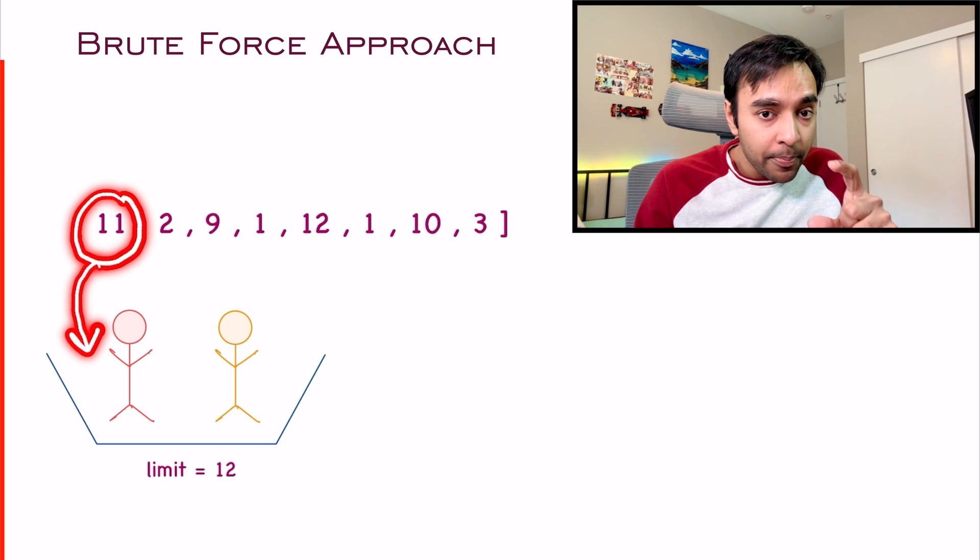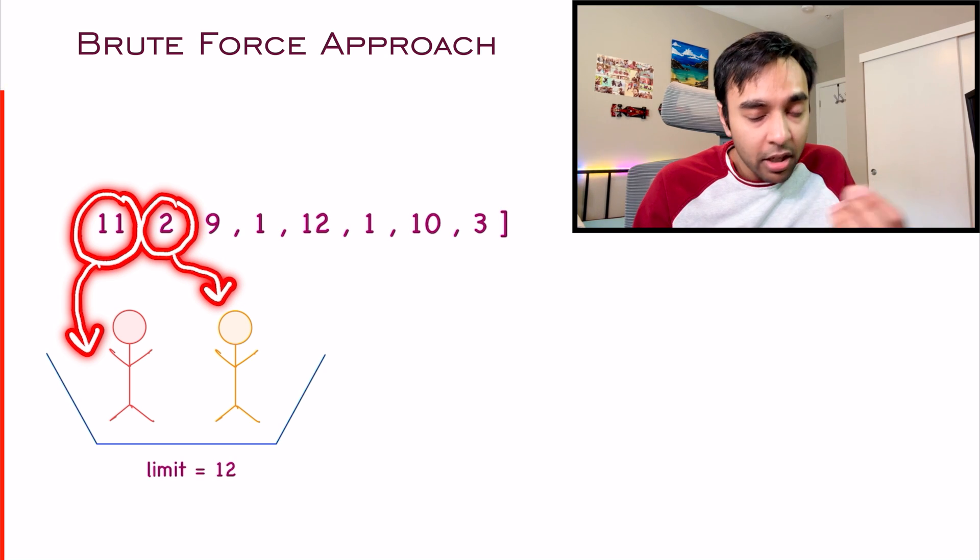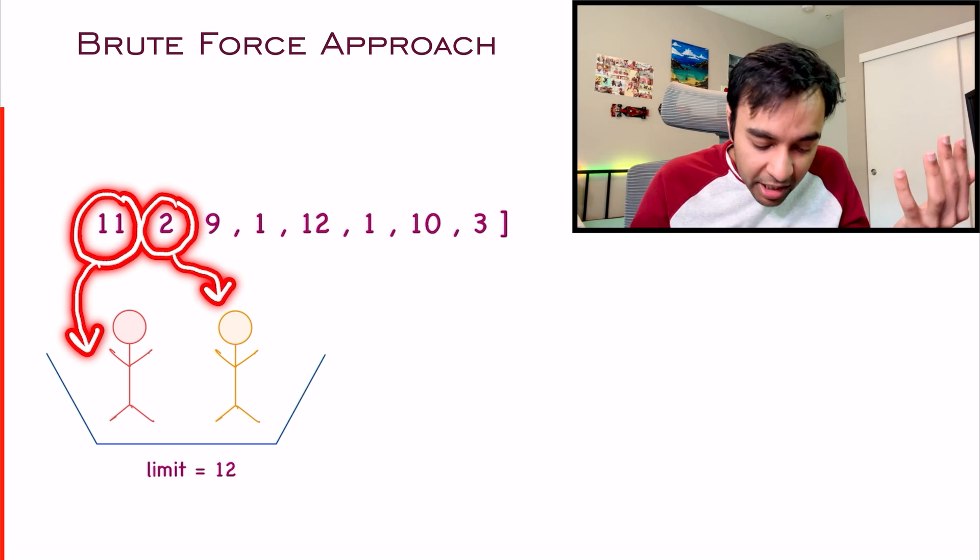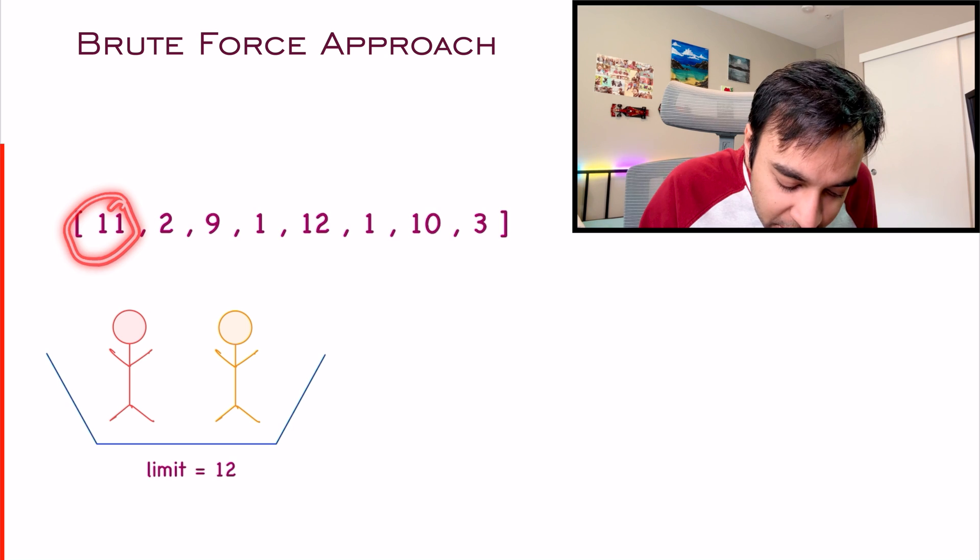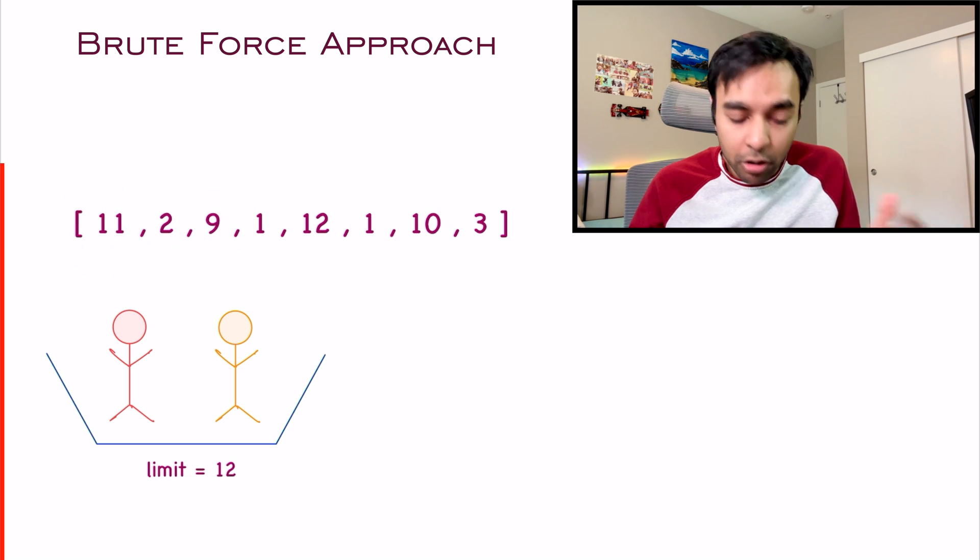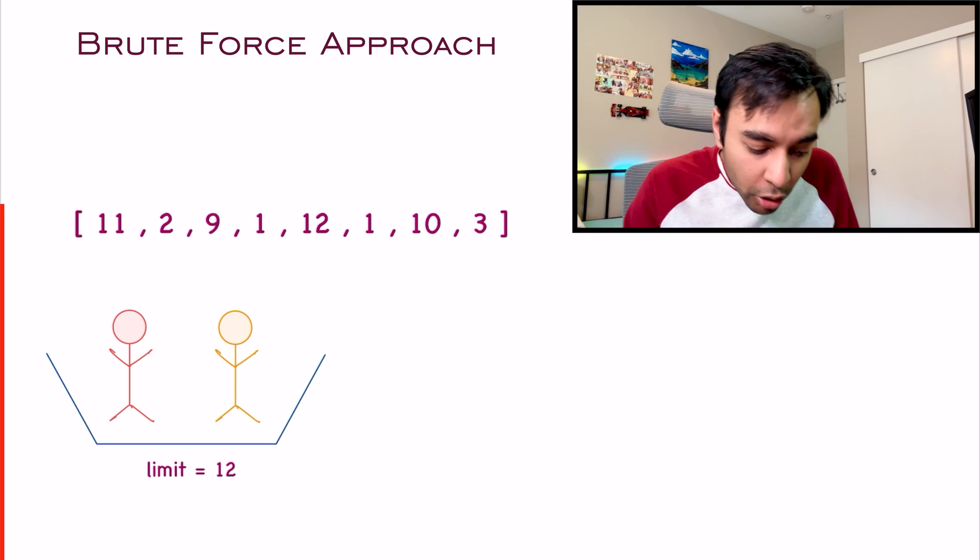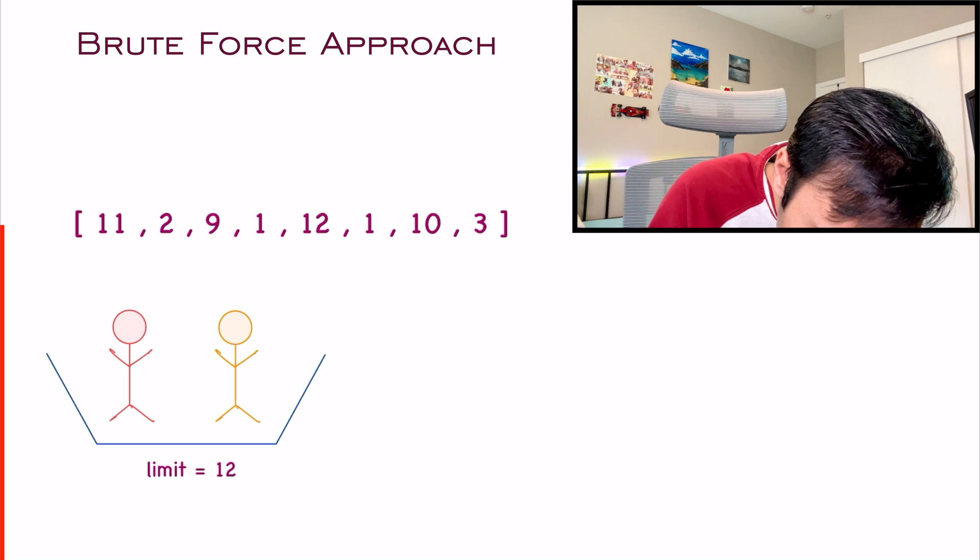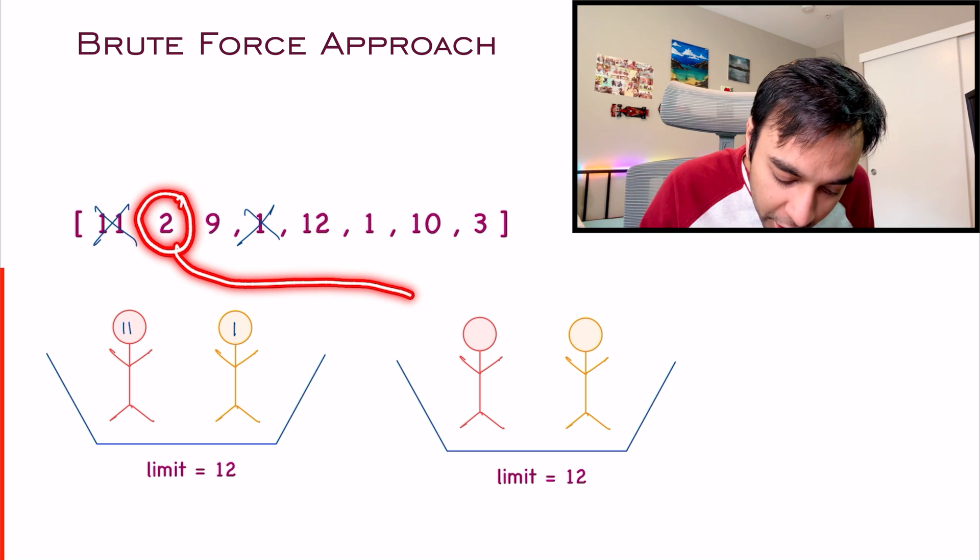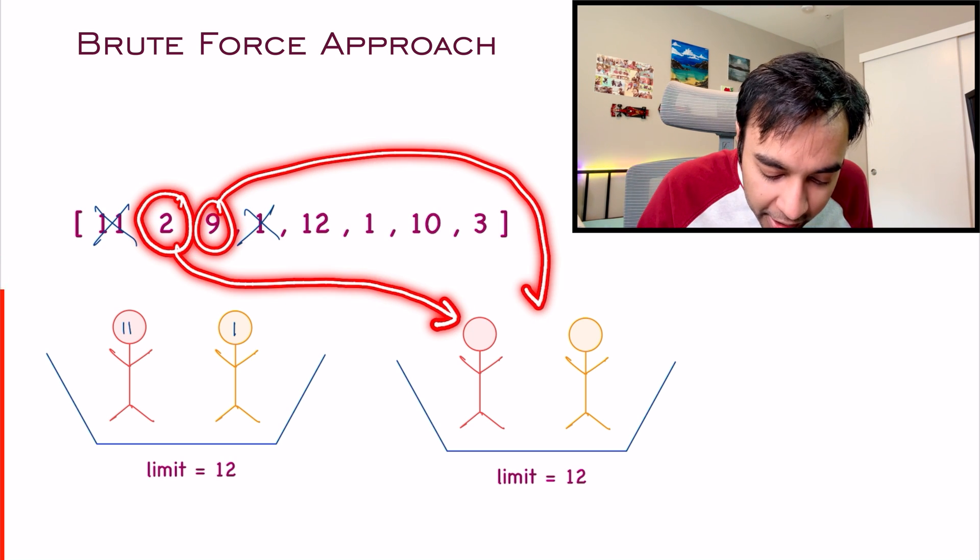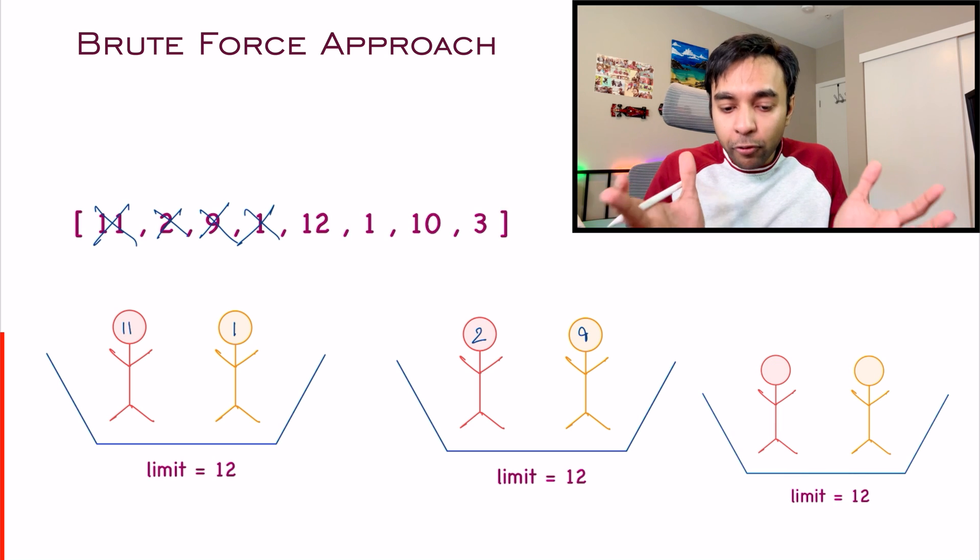If you have to start off with a brute force approach, what can you do? You can say, okay, I will start off with the first person and put it in the boat. The first person is in the boat. Then what you will do? You will try to find the second person that you can fit. Can you put 2 in there? No, because 11 plus 2 will become 13 and it is greater than 12. You will try to look at the next person possible. 11 and 9, they also cannot go. Can 11 and 1 go? Yes, because the limit is 12. This completes one of your boats. Similarly, now you will start your second boat and repeat the same process. You will try to fit in 2 and then you will try to fit in 9. They both can fit in the same boat and you can proceed ahead.